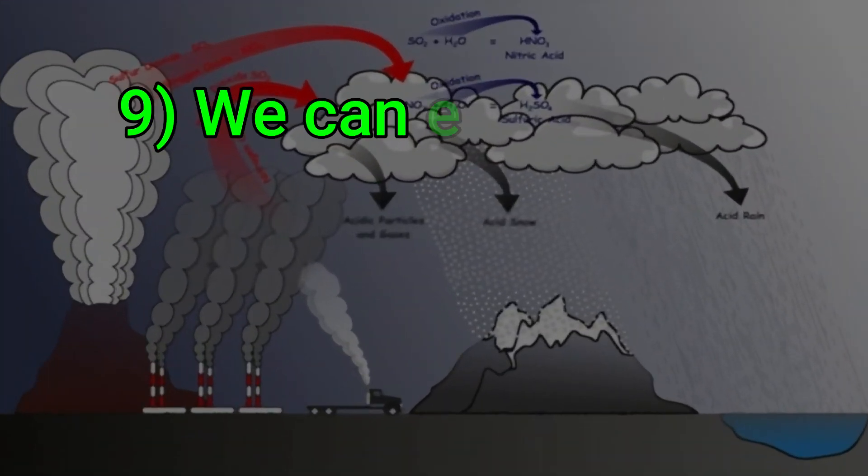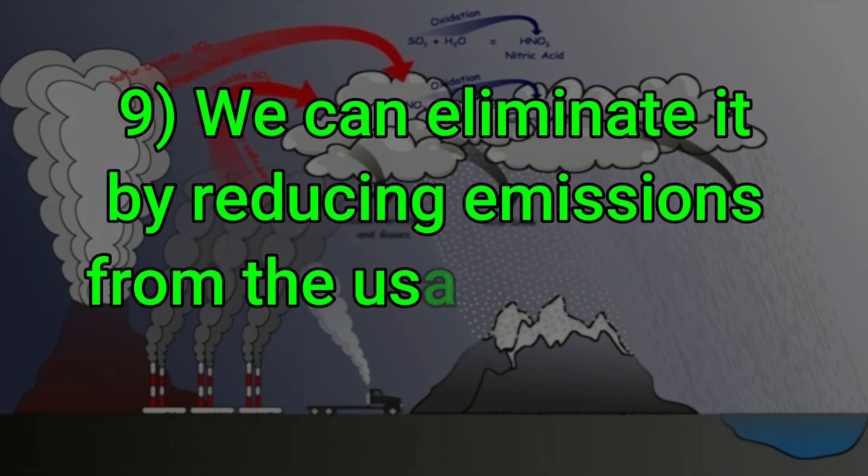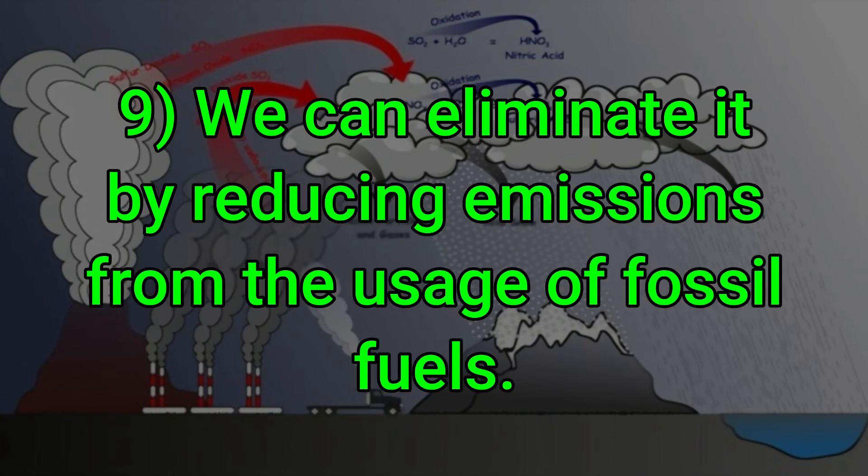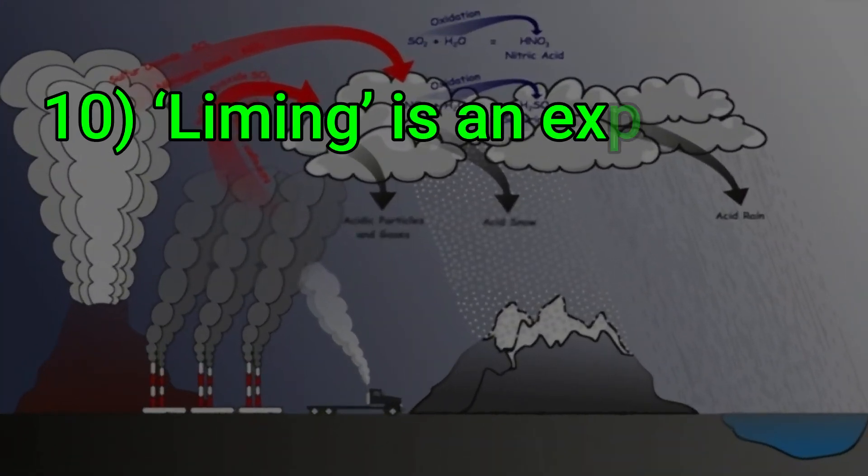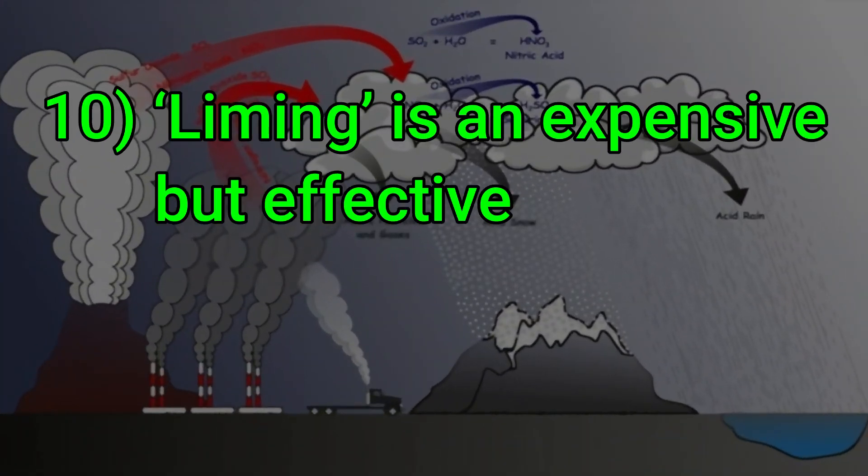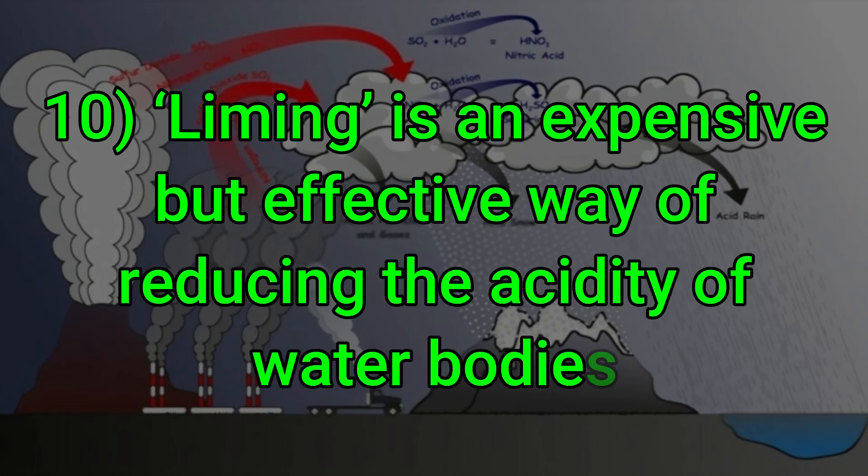We can eliminate it by reducing emissions from the usage of fossil fuels. Liming is an expensive but effective way of reducing the acidity of water bodies.